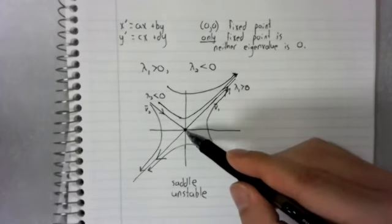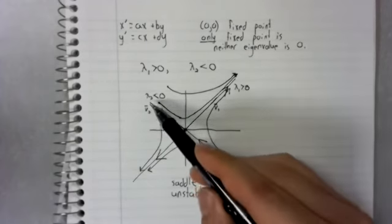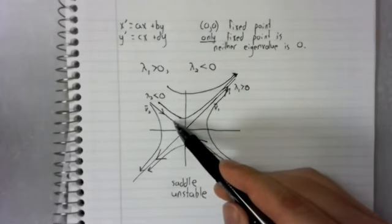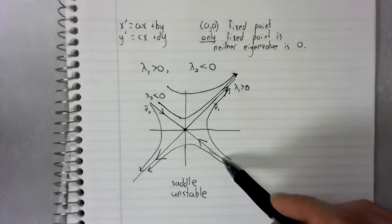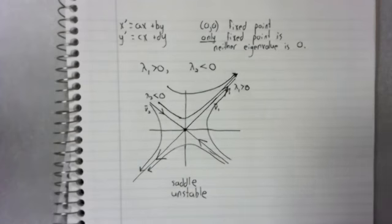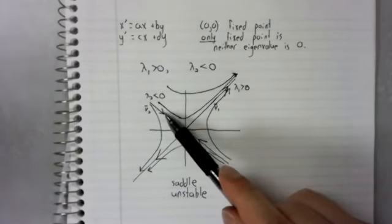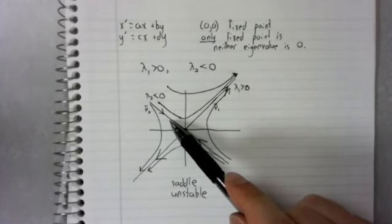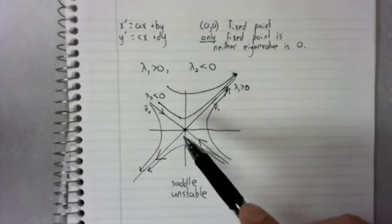What's also true is that this line is a one-dimensional object in two-dimensional space. It has literally no area. There is a zero percent chance that you start on it.